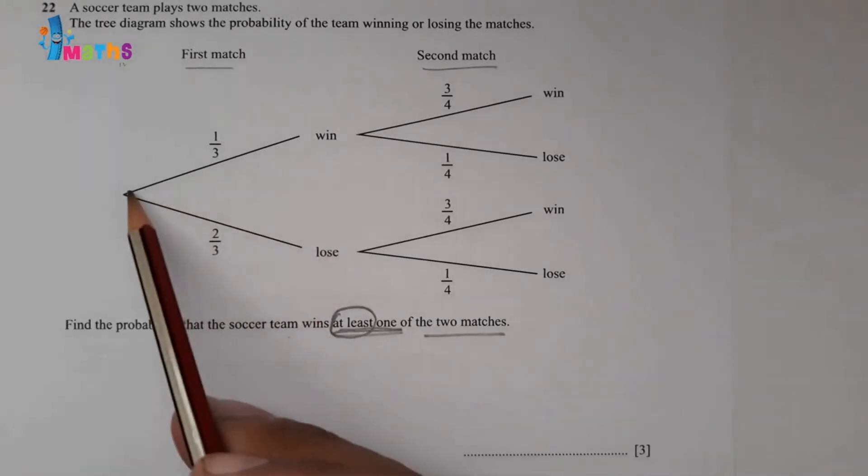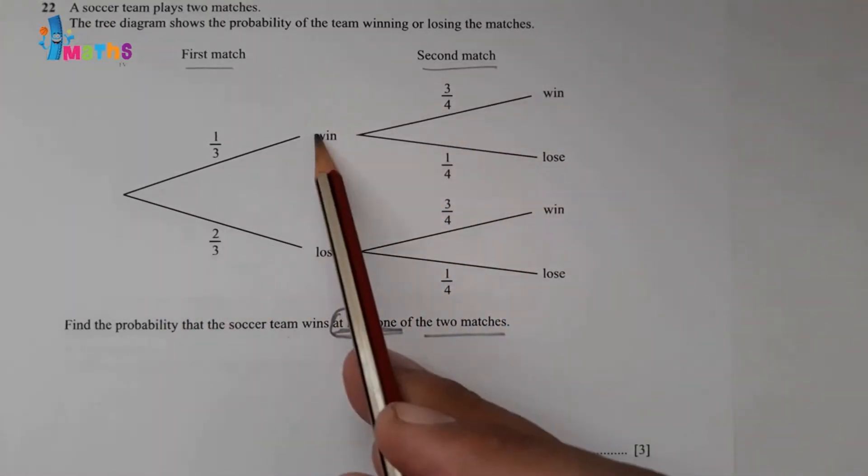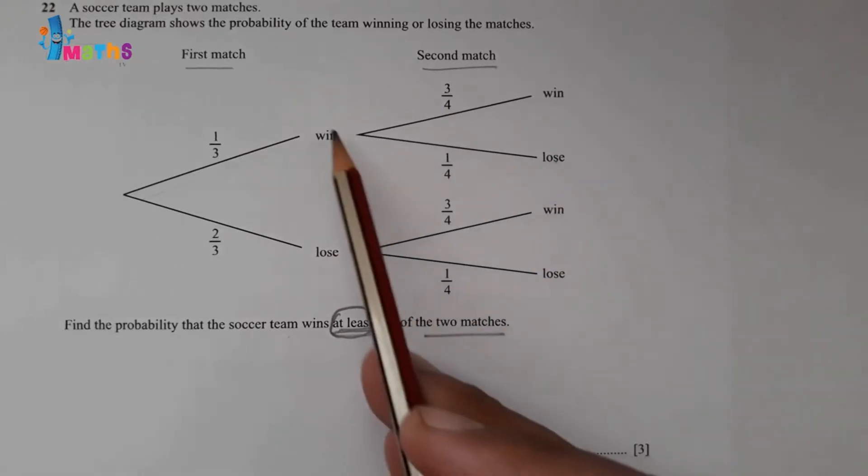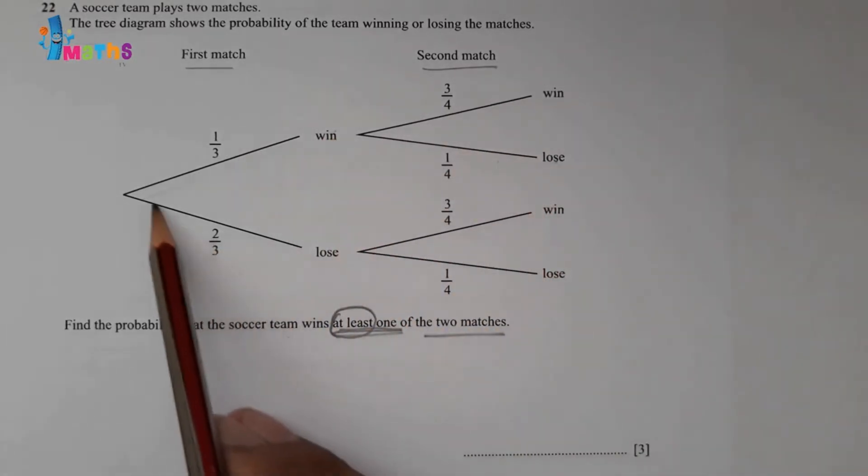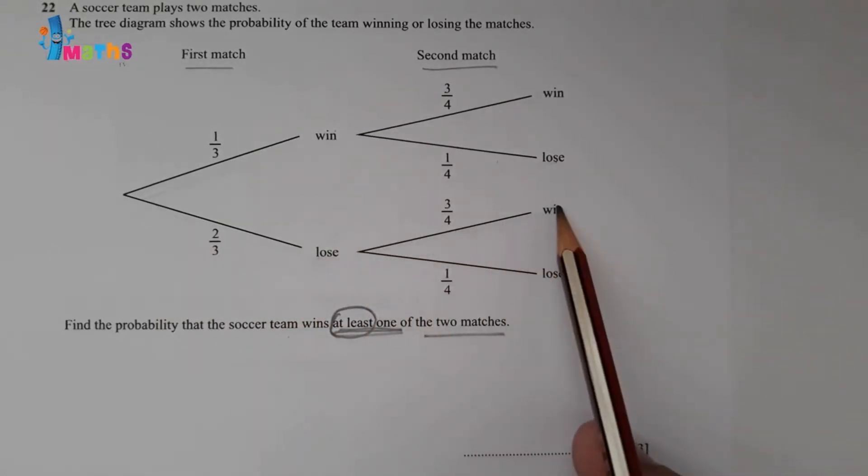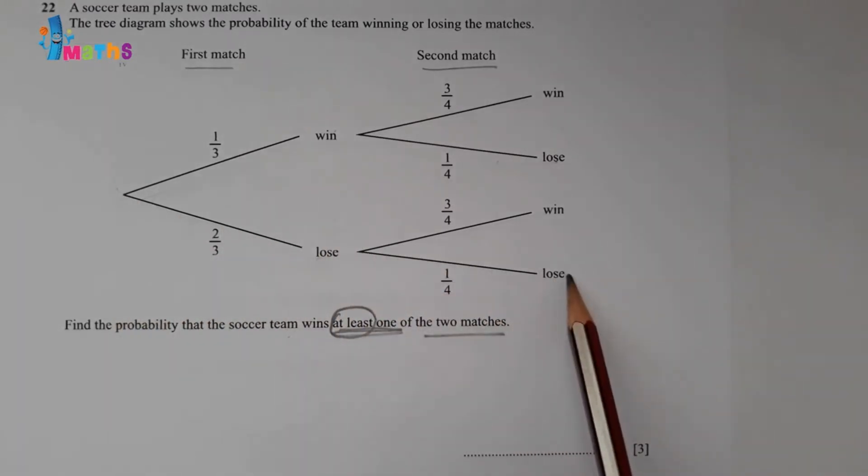See, this one is win, this is win, so this will be included. Win and loss, this will also be included because one is a win. So these both are included. This will be included: loss and win. Only excluded will be loss and loss—if the team is losing both matches at first level and second level, both are lost, then you can exclude.